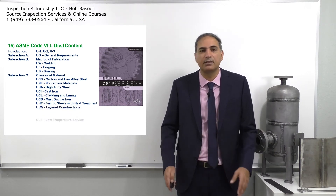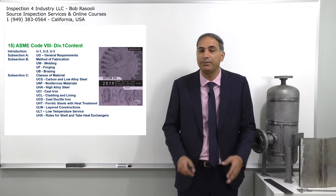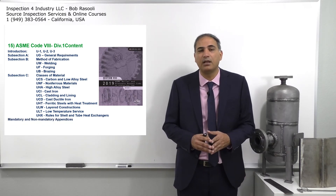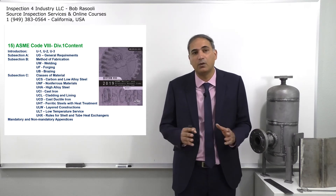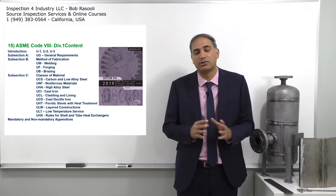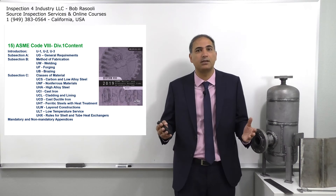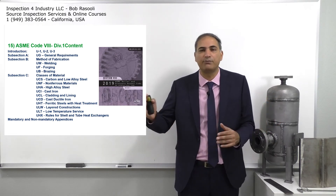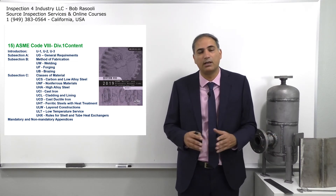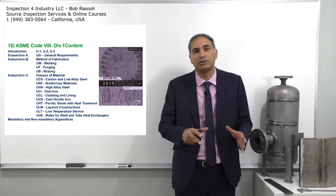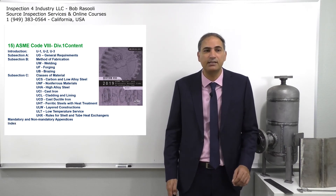ULW will be passed over here. ULT covers low temperature service. UHX covers rules for shell and tube heat exchangers, along with mandatory and non-mandatory appendixes. For your exam, the key parts to know are UCS for carbon and low alloy steel — such as 1% chromium, 0.5% nickel — and UHA for high alloy steel like stainless steel. We'll cover these; the others can be read independently.